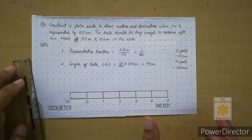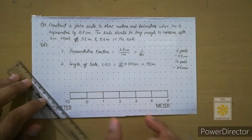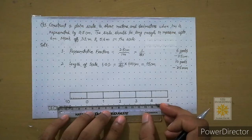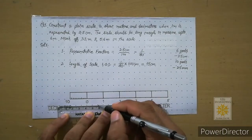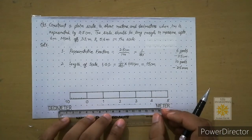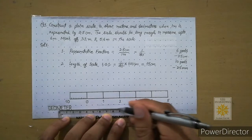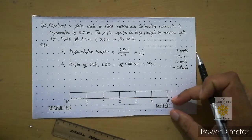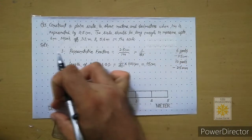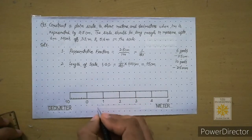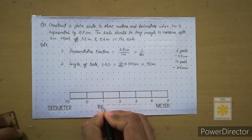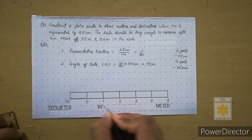Now the body of the scale is ready. Below the scale we have to mention RF and LOS. Draw two guidelines below the scale, keeping them aligned in one line so it looks neat. Then write the RF in gothic style: number one, then the fraction — one over forty.